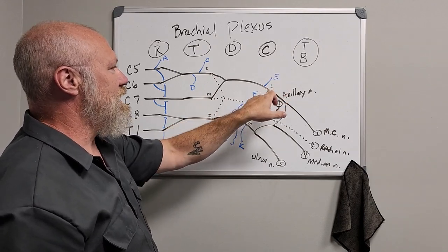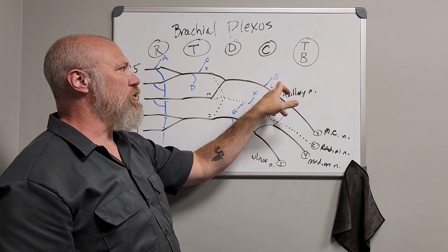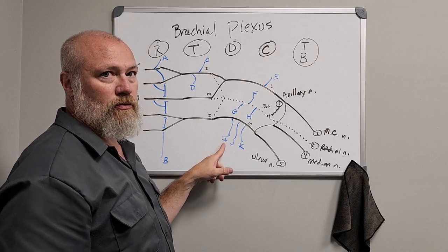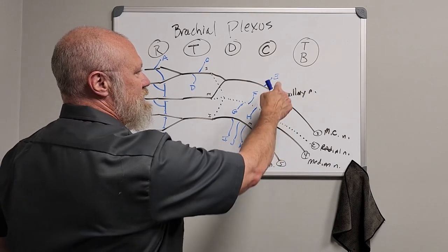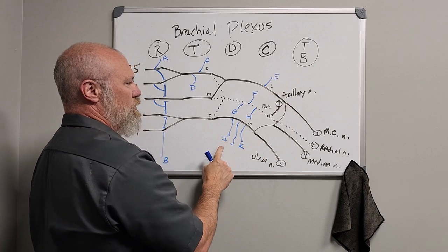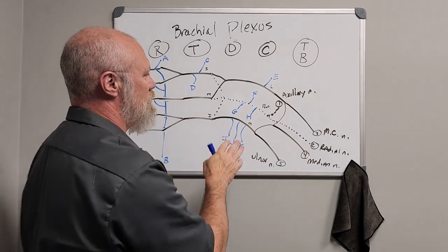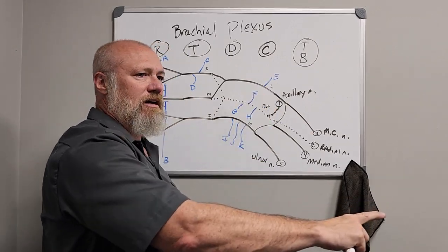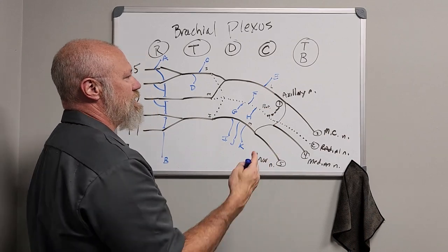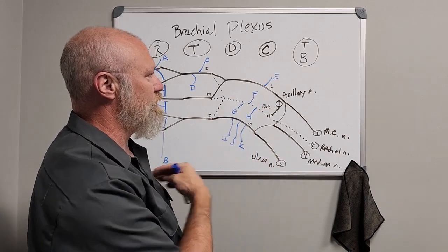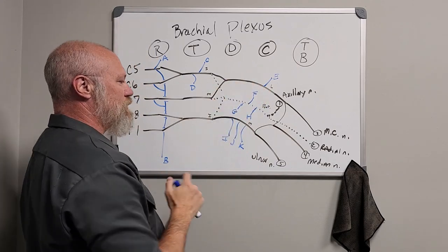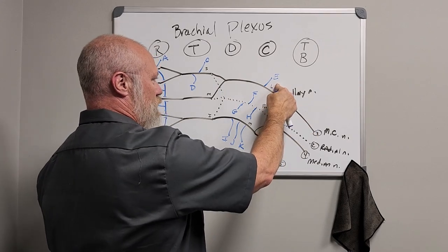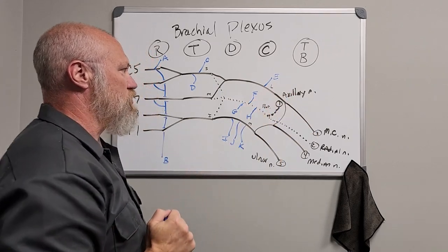Branch E off the lateral cord is the lateral pectoral nerve. Branch I off the medial cord is the medial pectoral nerve. In some specimens or bodies these two will join together and then diverge again, though that's not typical. If you're trying to identify which you've found, trace it back — lateral cord gives lateral pectoral nerve, medial cord gives medial pectoral nerve.